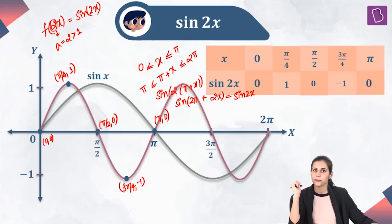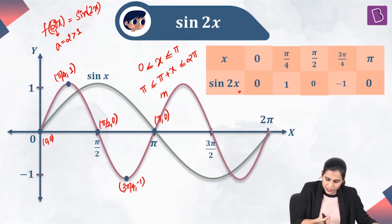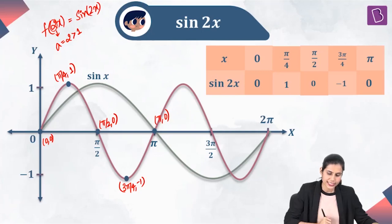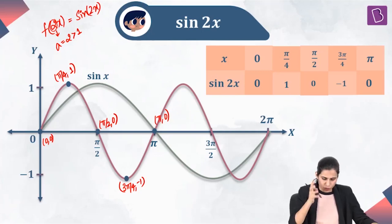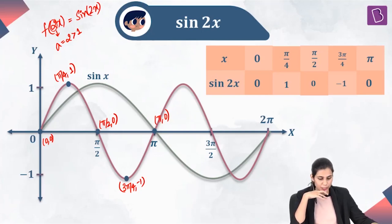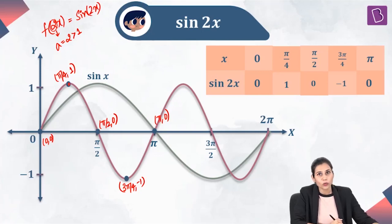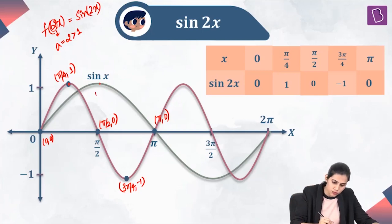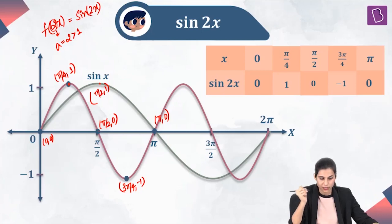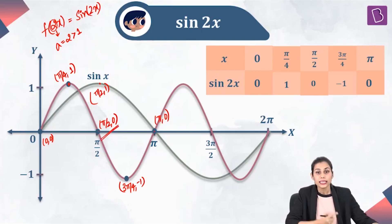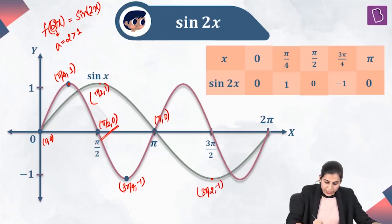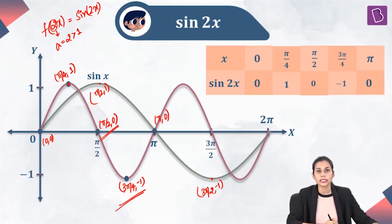Now it's time for some real observation. You have two graphs in the Cartesian plane — the green one is sin x and the pink one is sin(2x). At π/4, sin(2x) is 1, whereas sin x becomes 1 at π/2. Sin x becomes 0 at π, but sin(2x) becomes 0 much earlier at π/2. Similarly, sin x is −1 at 3π/2, but sin(2x) reaches −1 much earlier at 3π/4.